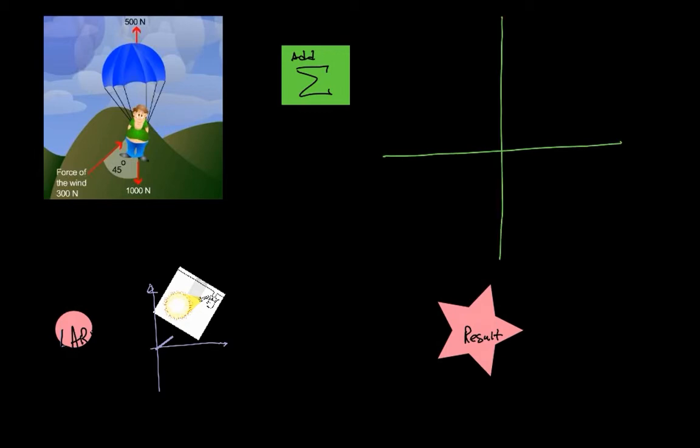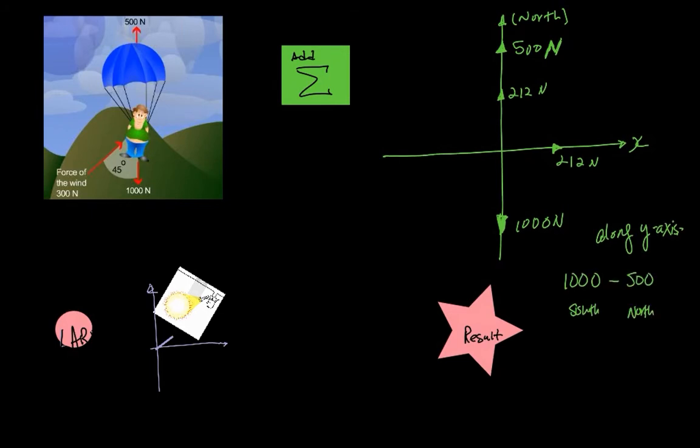Next step, I'm going to add on the north-south axis. I have 500 going upward, and I have components of the wind, 212 going upward, and I also have a gravity of 1000 going downward. So along y-axis, if I would add them together, I would have 1000 minus 500, because it's opposite directions, and I have 212 subtracted out as well.